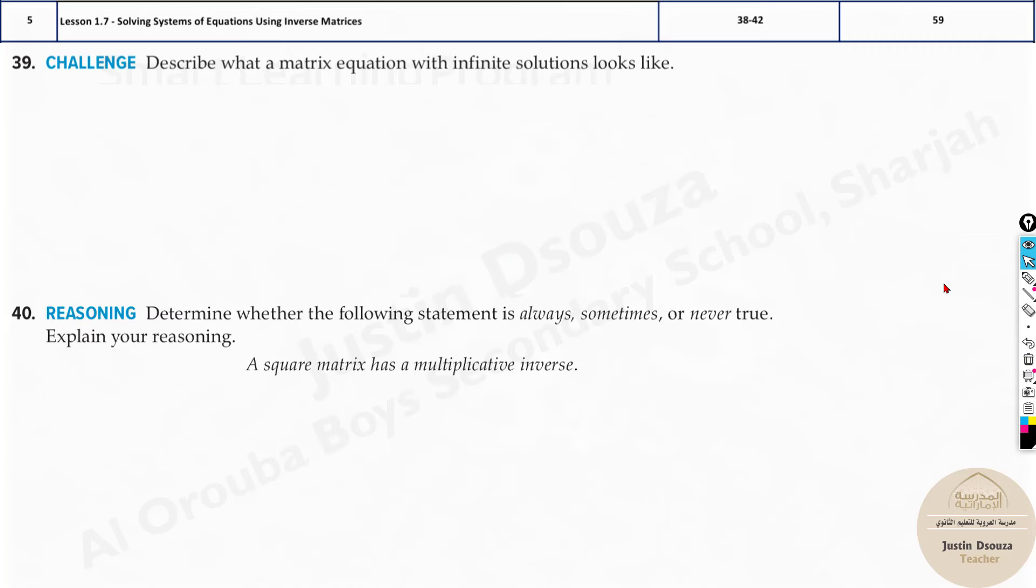Describe what matrix equation with infinite solutions look like. You need to write a matrix equation for infinite solutions. First, write two equations which have infinite solution. That means they have the same equation, right? Imagine you have 2x plus 3y equals 7. This must be the same equation. Because if the same equations, that means they are overlapping and it's infinite.